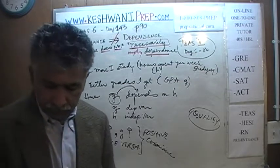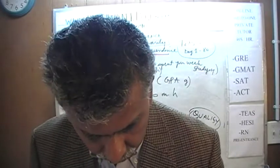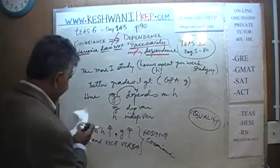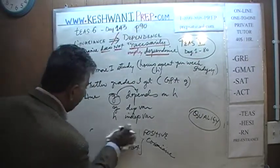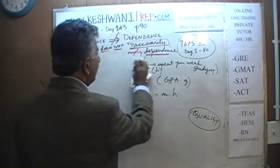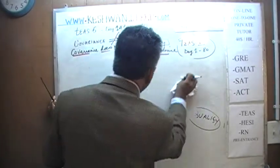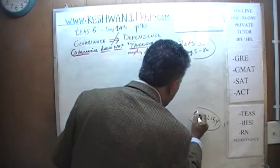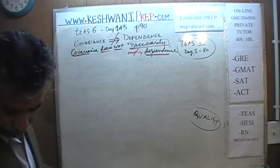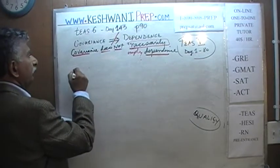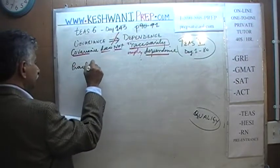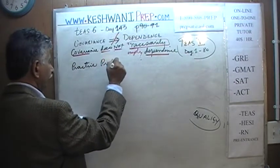Before I close the video, let's do one last problem. You are going to see several varieties here to understand what it means to have covariance and what it means to have dependence. This problem is on page number 91, practice problem number 1.